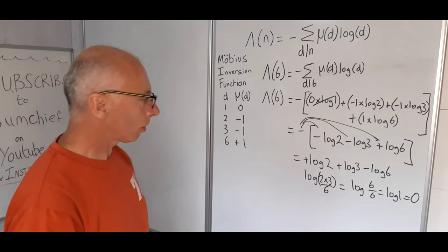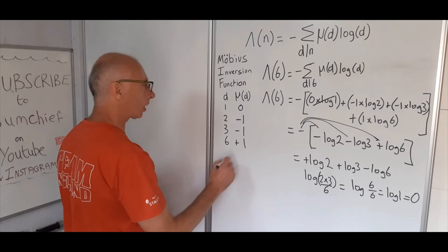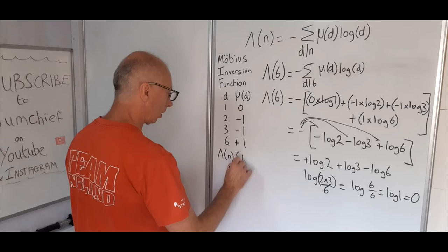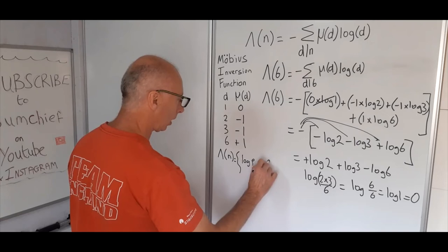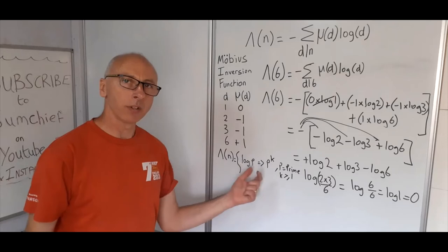Now we need to find the Von Mangoldt function for 6. The Von Mangoldt function for n is a piecewise function. If n equals p to the power of k, where p is prime and k is greater than or equal to 1, it equals log of p. In every other circumstance, it's 0.